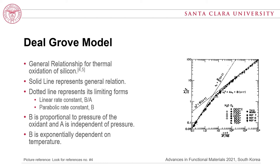The Deal-Grove model indicates that the parabolic rate constant B is dependent on pressure and temperature. This means oxide growth depends on a wide range of conditions such as ambient pressure, temperature, and time. Since the 111 plane has more atomic interactions at the surface than the 100 plane, under equal growth conditions, the 111 plane oxide thickness should be larger than the 100 plane oxide thickness, due to a higher linear growth rate resulting from more atomic interactions at the surface.